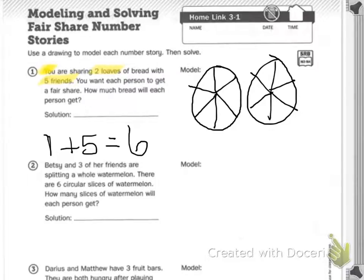So if I take my pen and I'm going to label one, two, three, four, five, six. One, two, three, four, five, six.